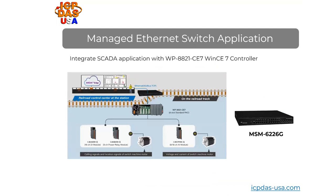Our MSM6226G managed Ethernet switches are being used in railway monitoring applications with our WP8821CE7 programmable automation controller with eight IO slots and Windows CE7 operating system. It runs multiple programs simultaneously, including a data logging application, a control application, and a monitoring application viewable over a web page. The managed switch ensures network priority is given to the controller and provides network security from unauthorized access.